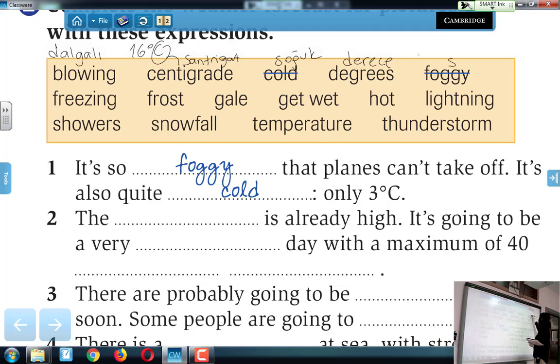Foggy, sisli demek. Freezing, dondurucu şekilde ne? Soğuk. Dondurucu bir soğukluk var. It's freezing outside dediğimiz zaman mesela, dışarısı buz gibi anlamında geliyor. Frost da buzlanma. Kayıp düştüğünüz havalarda bu sıfat kullanılıyor. Frost. Gale, bu da fırtına demek. Ya da şiddetli. Zaten fırtına ne demekti? Şiddetli rüzgar.